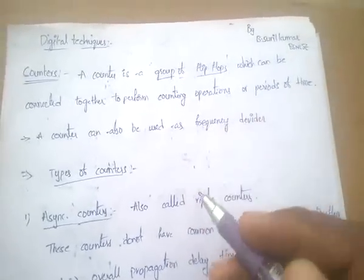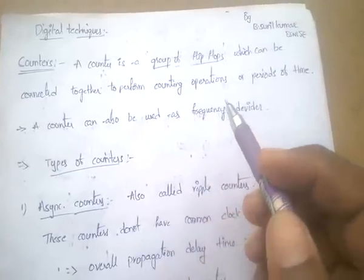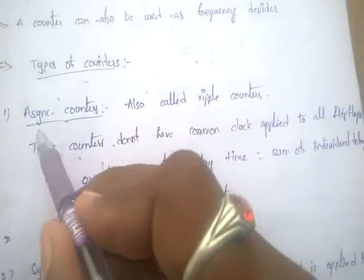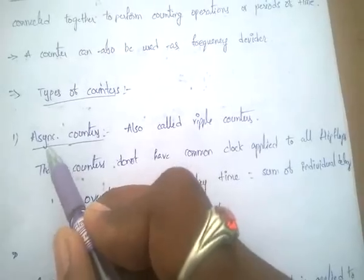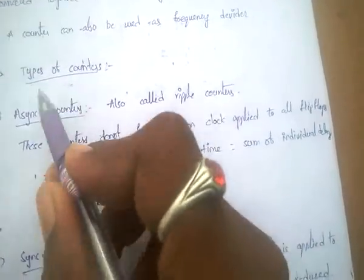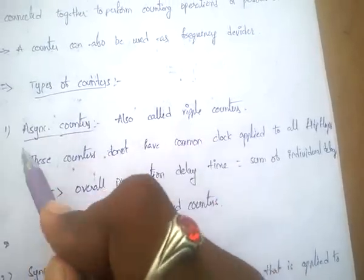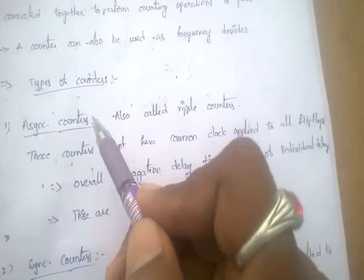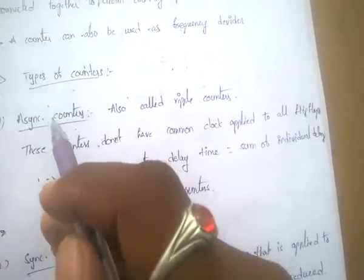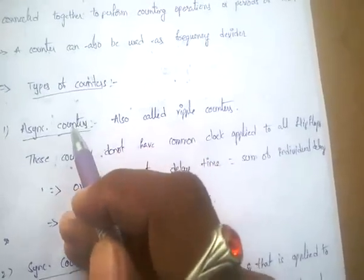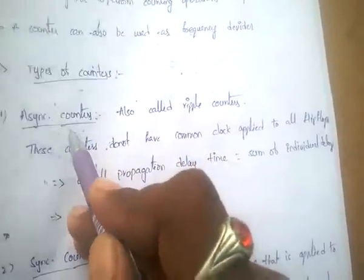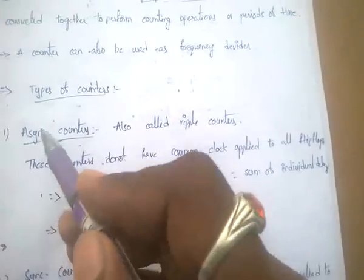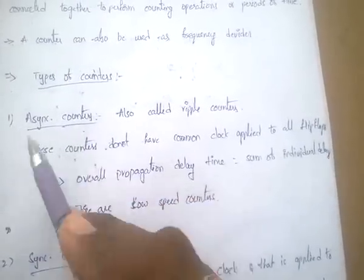Coming to the types of counters, there are many types. First of all, the asynchronous counter — there is no synchronization, meaning the clock applied to this counter is different for every flip-flop. Different clock pulses are applied to different flip-flops, so the propagation delay is increased. That's why these are called low-speed counters.